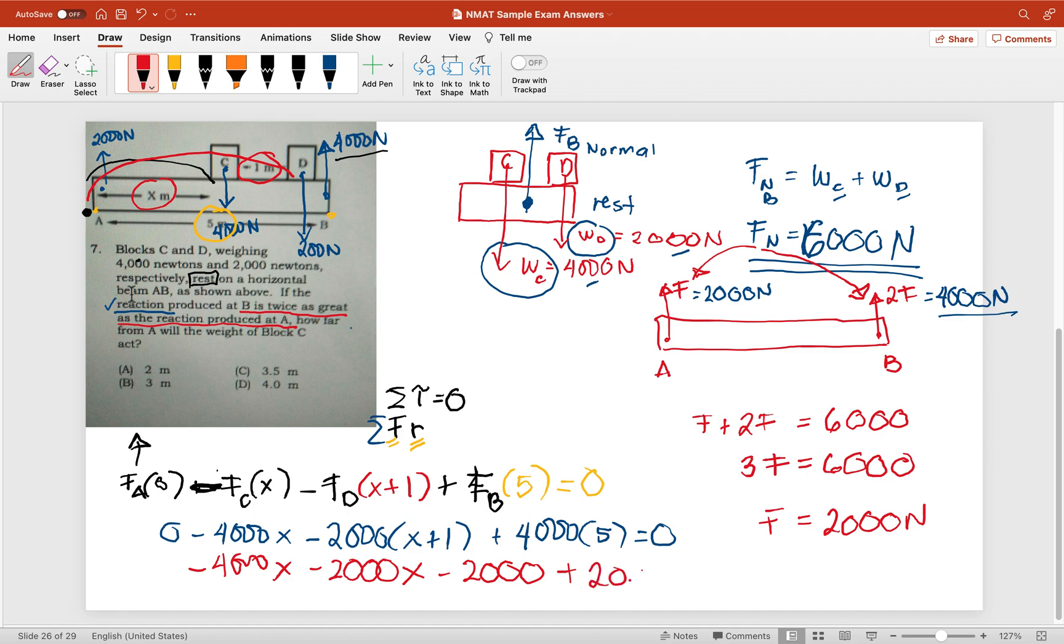That would be 20,000 minus 6,000x equals zero. So 18,000 equals 6,000x.